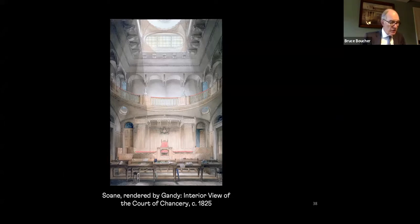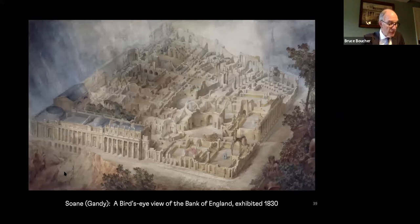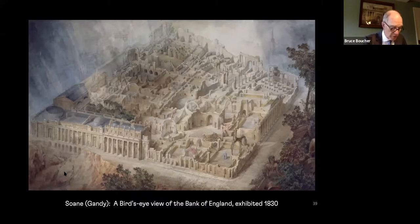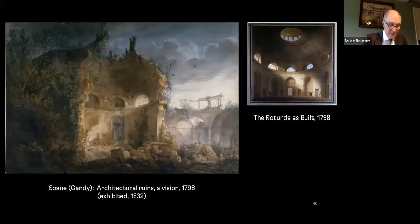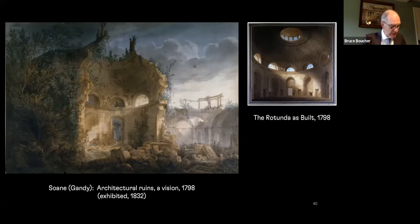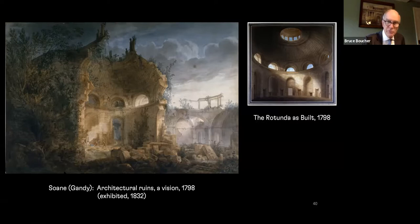Probably the most extraordinary of these exhibited watercolors are the two shown at the Royal Academy successively in 1830 and 1832: A Bird's Eye View of the Bank of England, which we see here, and Architectural Ruins, a Vision. Although not displayed together now, they share the same desolate atmosphere, juxtaposing the architect's dream projects and his executed works. Architectural Ruins was carried out by Gandy in 1798 — the same date as the view of the rotunda we looked at earlier in the talk — but only exhibited in 1832, three decades later. The two views of the rotunda appear to have been companion pieces.